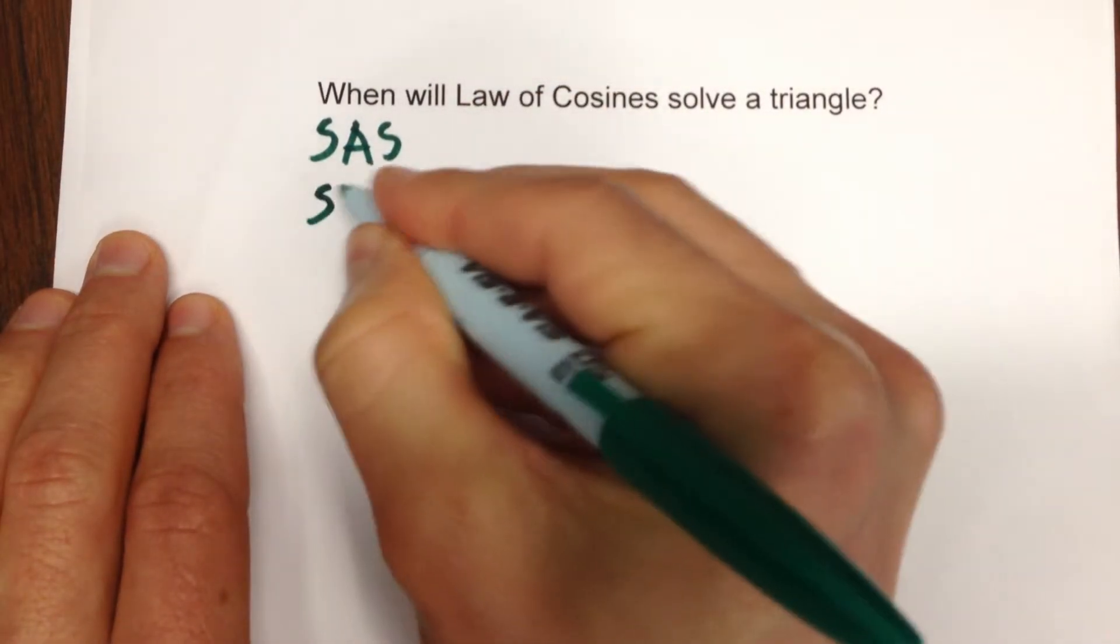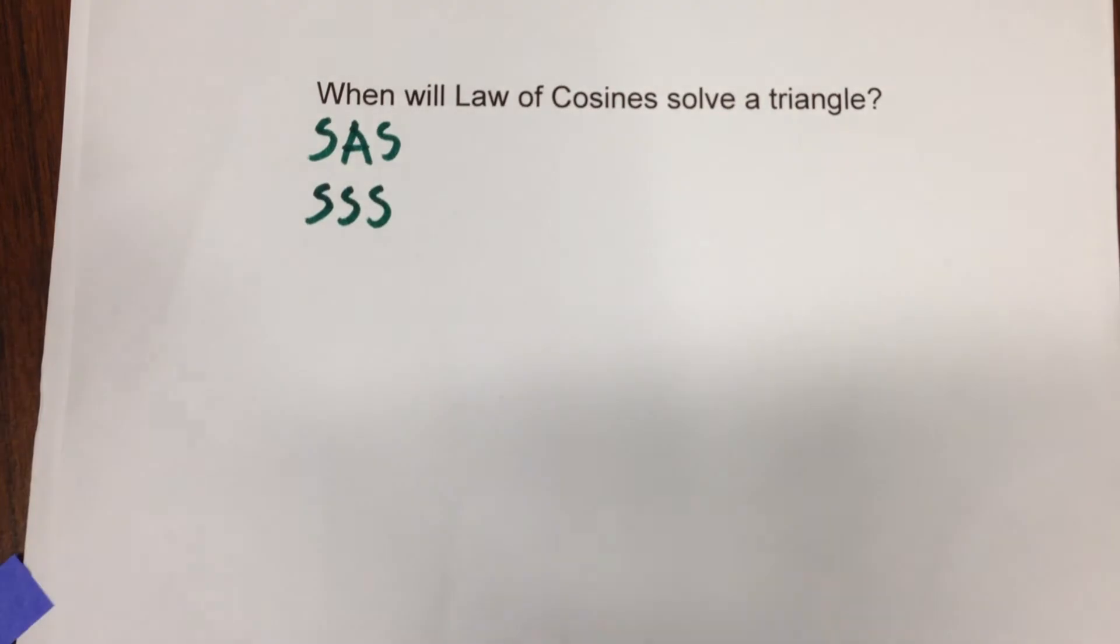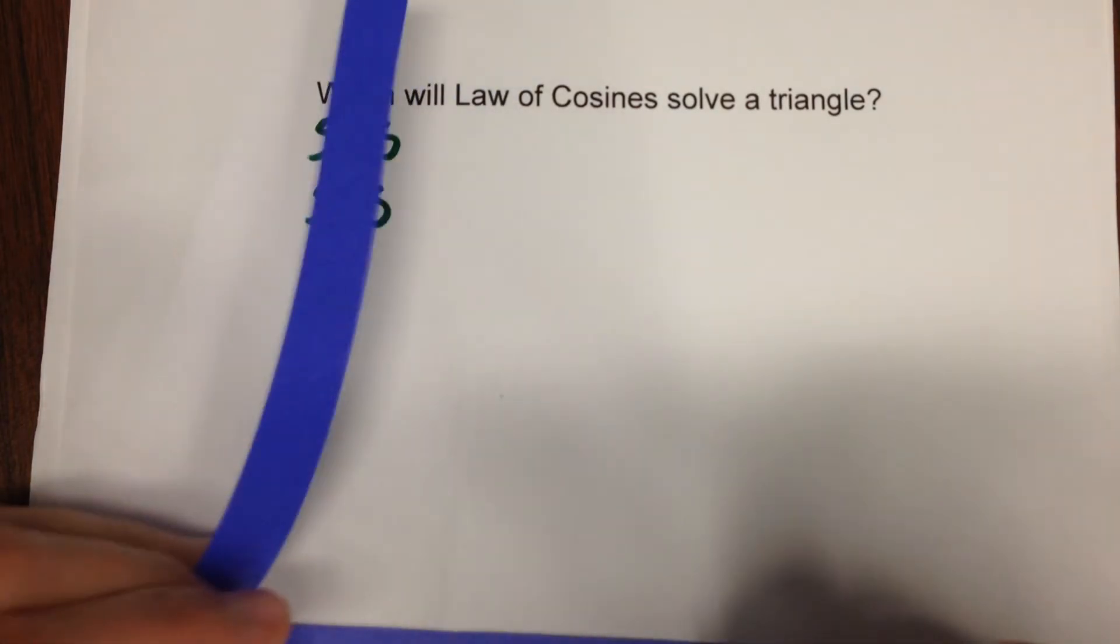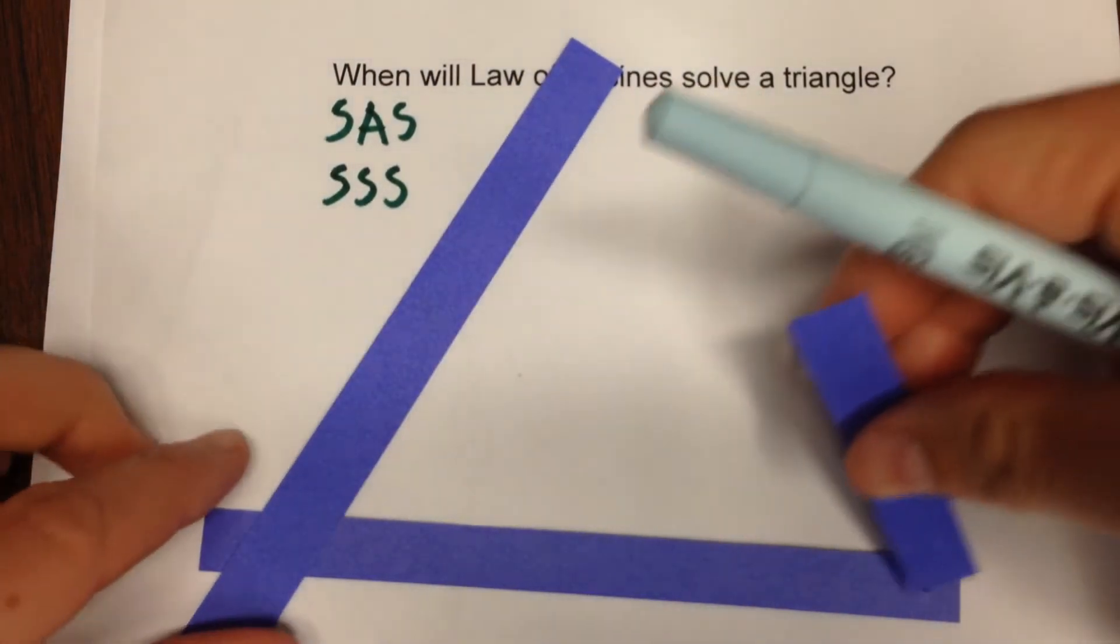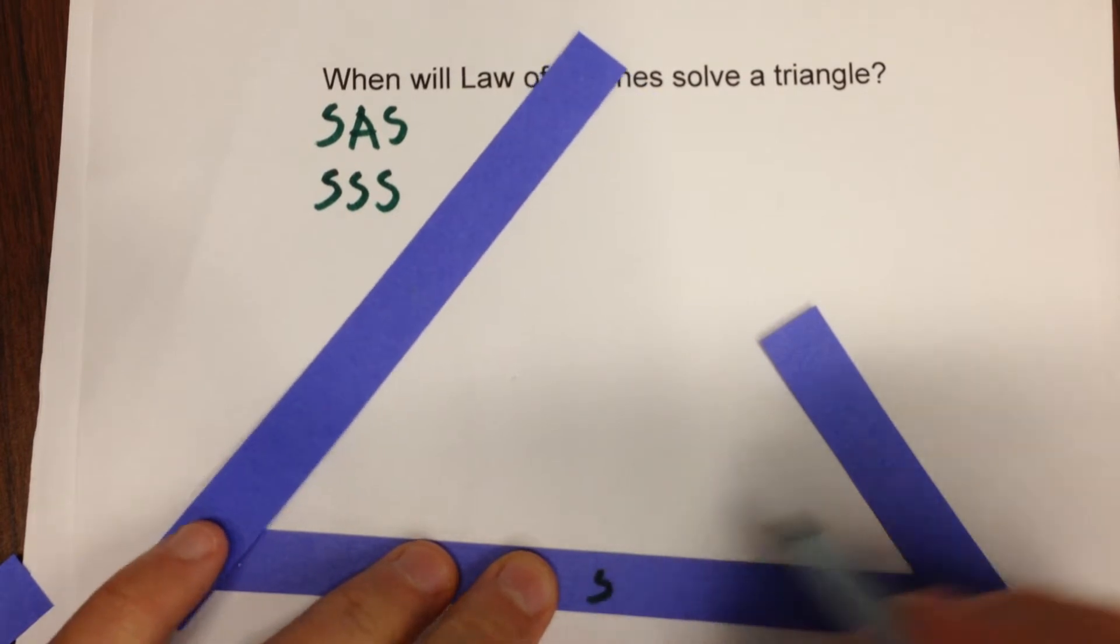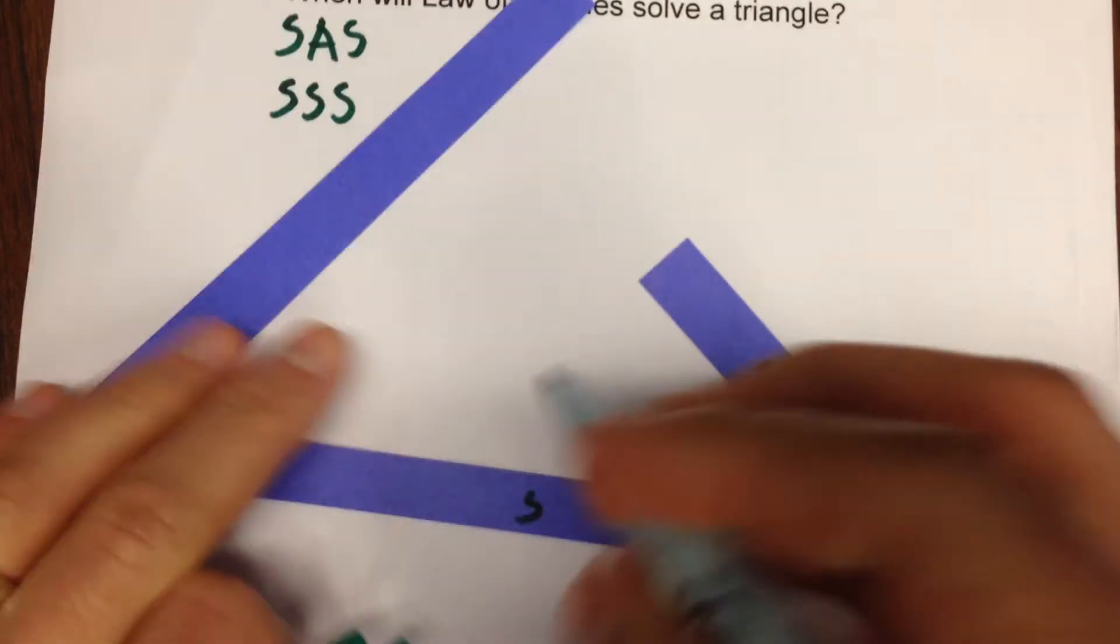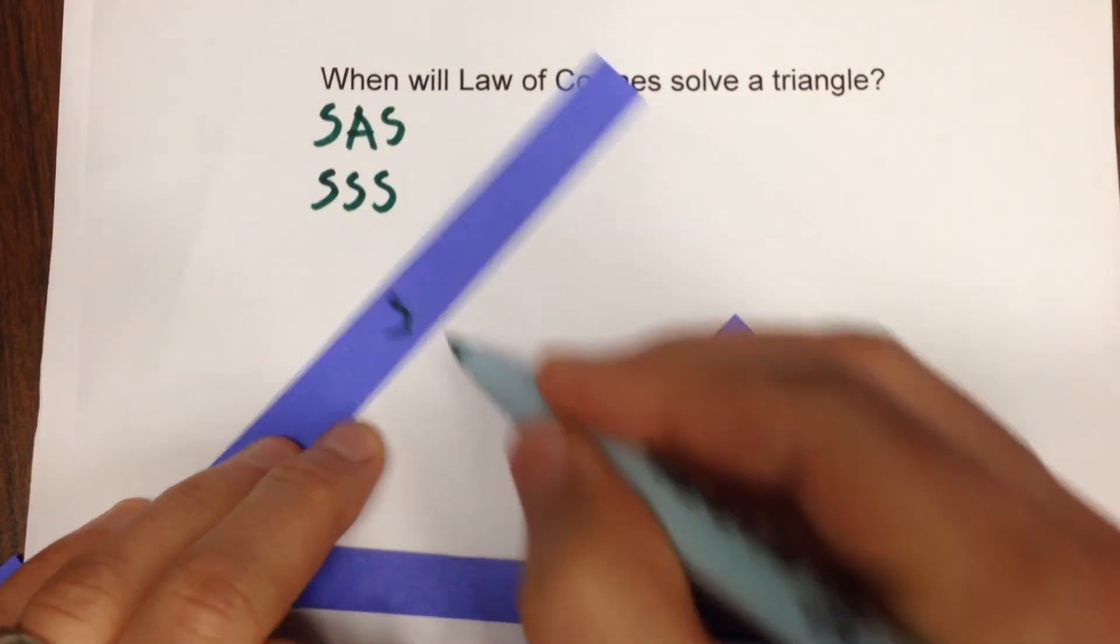The next case that you'll have is side side side. So let's imagine that all of the sides of your triangle are completely determined. So I've got three sides there, side length is determined, side length is determined, side length is determined.